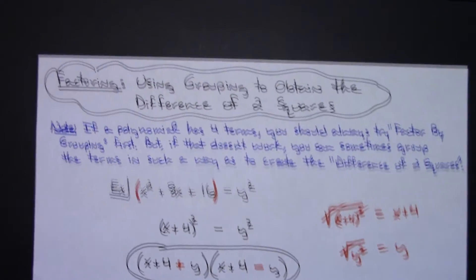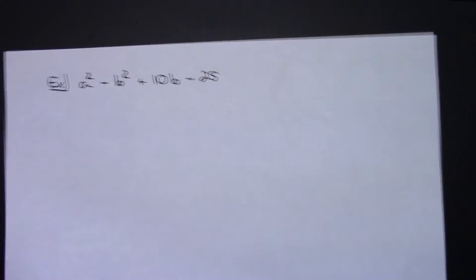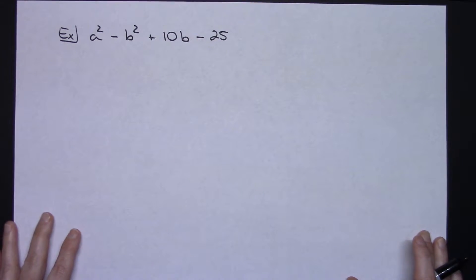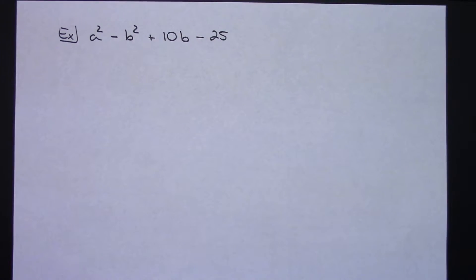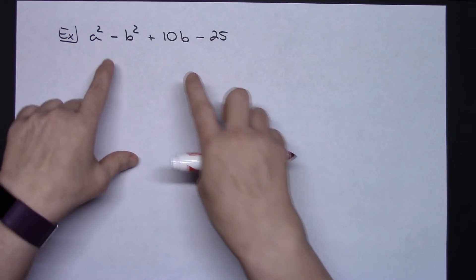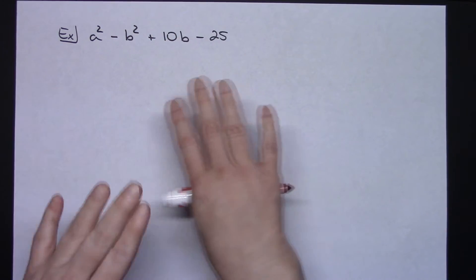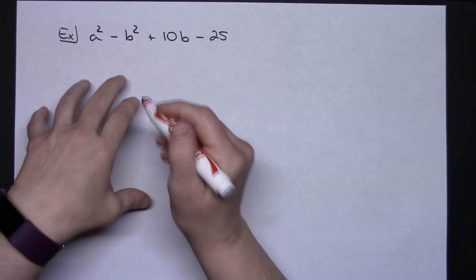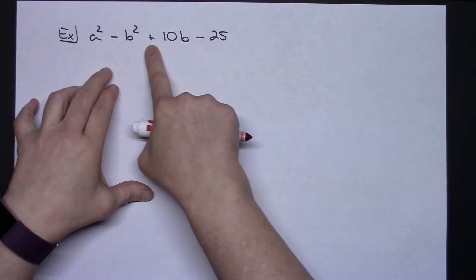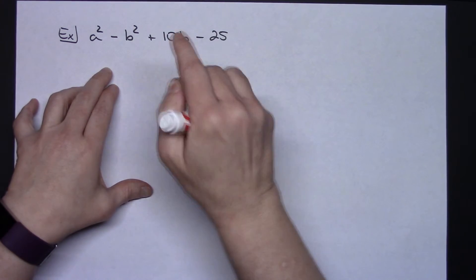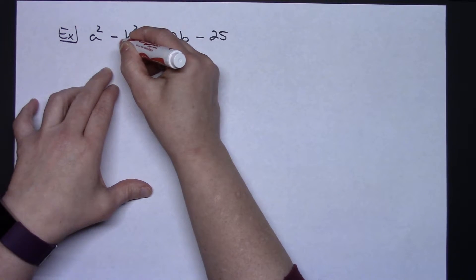Now let's go to a second example. This one is done basically the same way, however things are in a different order so it is going to make a difference — you're going to have to force that perfect square trinomial. If I try factor by grouping I'm not going to get anything to match, and even if I rearrange the terms I'm still not getting anything to match. So I need to look at these three terms: I've got b squared plus 10b minus 25.